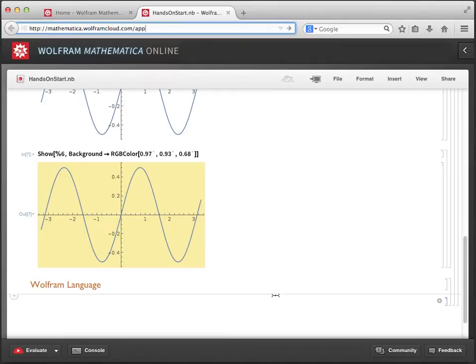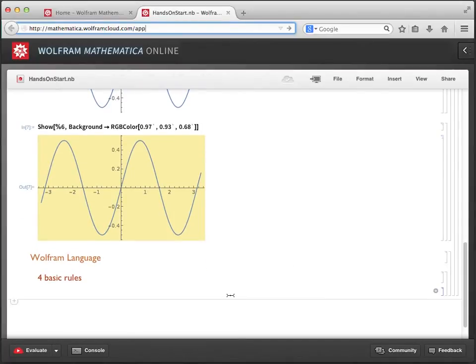Luckily, the Wolfram language is very high-level, which makes it easy to get started, and there's just a few things you'll need to remember. So let's go back to our notebook and make a sub-subsection cell below the Wolfram language, and call it 4 Basic Rules. Now, let's start a new cell with Command or Alt-7 keyboard shortcut to make a text cell and enter our first rule, which is capital letters on all command names.